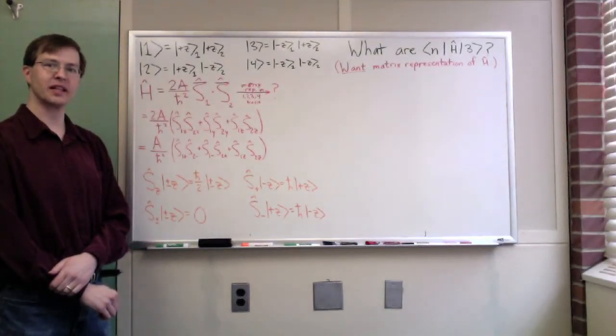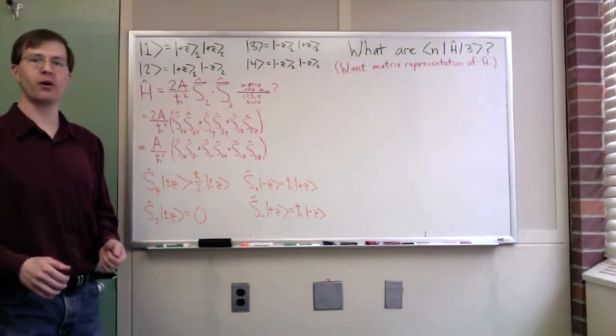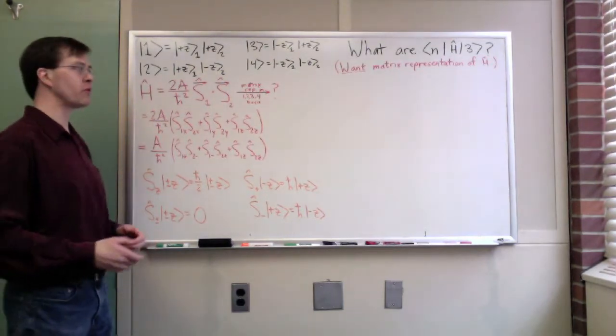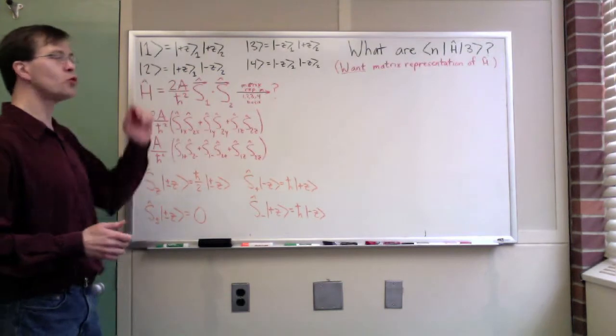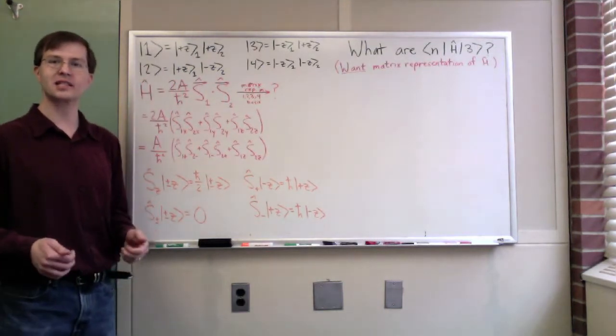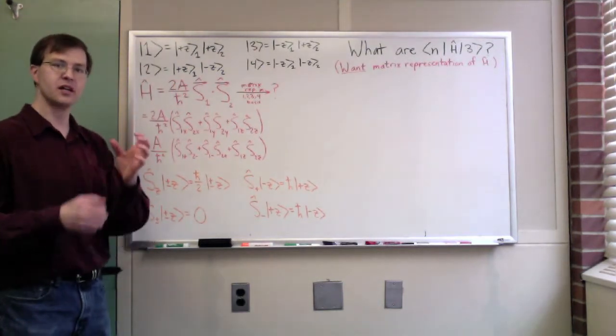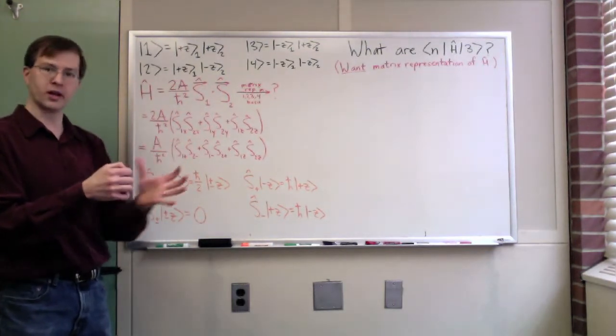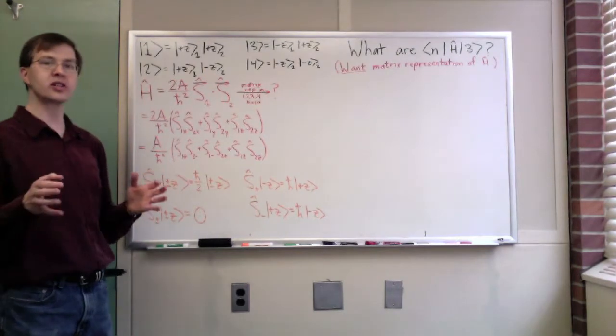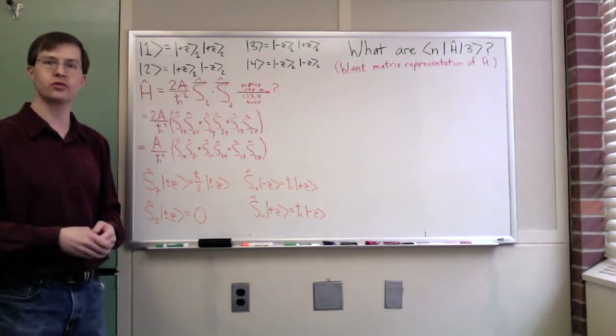In our quantum mechanics class recently, we've been talking about systems of multiple particles. In particular, the simplest example in a spin system is a system of two spin-1/2 particles. The classic example is a hydrogen atom, which has a spin-1/2 proton in the nucleus and a spin-1/2 electron orbiting around it.